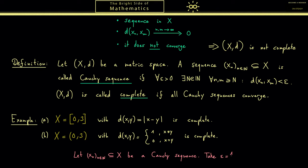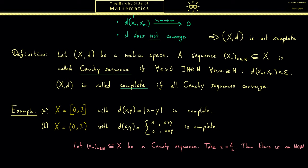Then we know there is a capital N such that all indices that are greater than N fulfill this. This means that the distance between x_n and x_m is less than epsilon, or in other words less than 1 half.